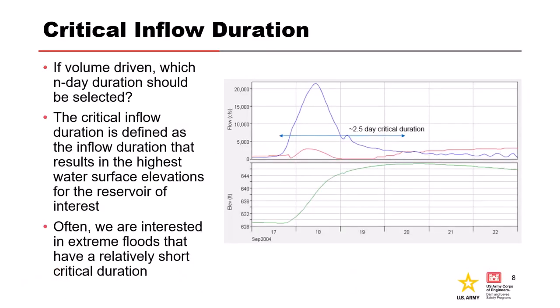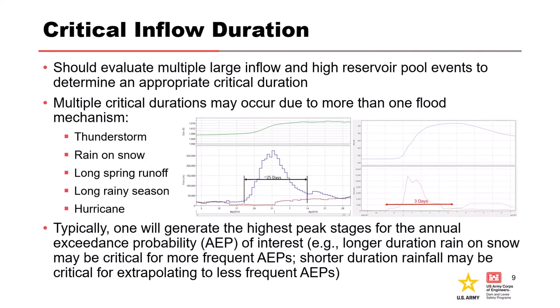For a volume-driven project we need to determine which n-day duration to select. The critical inflow duration is defined as the inflow duration that results in the highest water surface elevations for the reservoir of interest. Often we are interested in extreme floods with relatively short critical durations. One assumption is that the critical inflow is the time the reservoir inflow exceeds reservoir releases — when inflow exceeds outflow, reservoir storage increases. Another assumption is the time the majority of the inflow hydrograph occurs, roughly the middle 80% of the event volume. We want to pick single events since extreme events tend to be based on one single event.